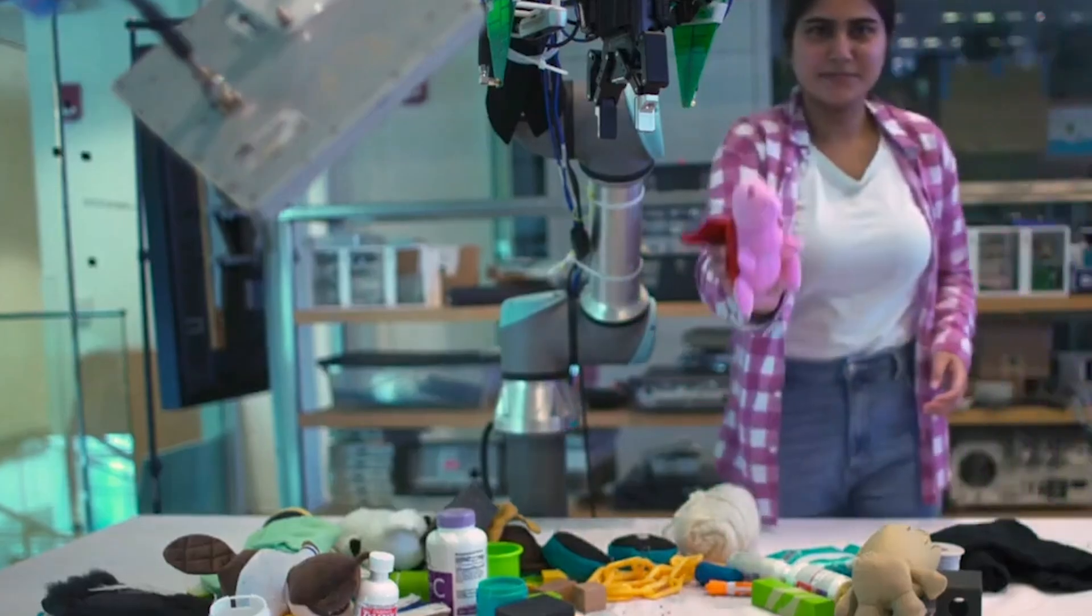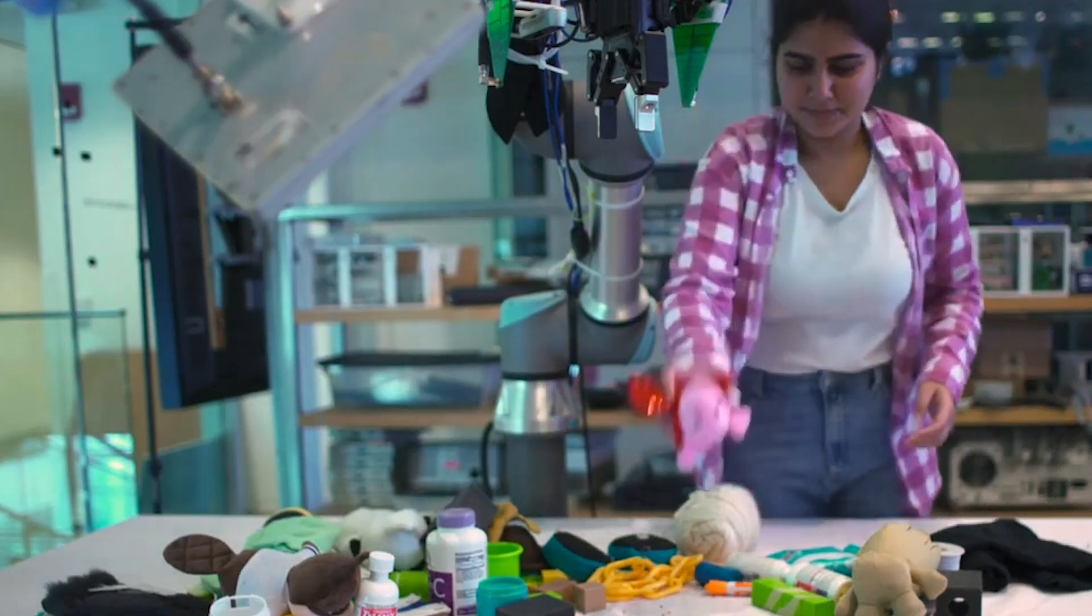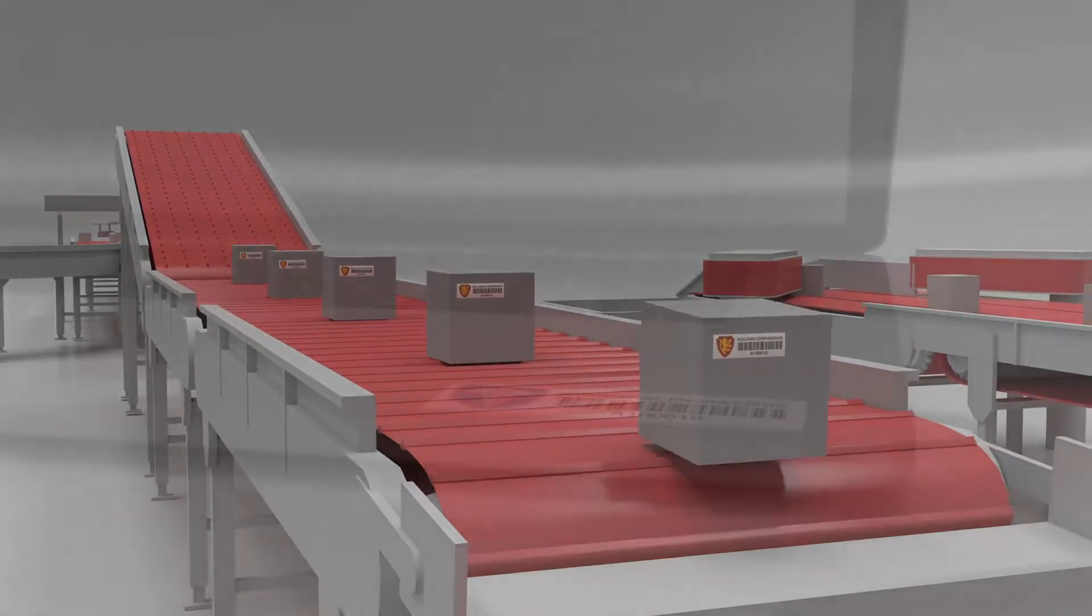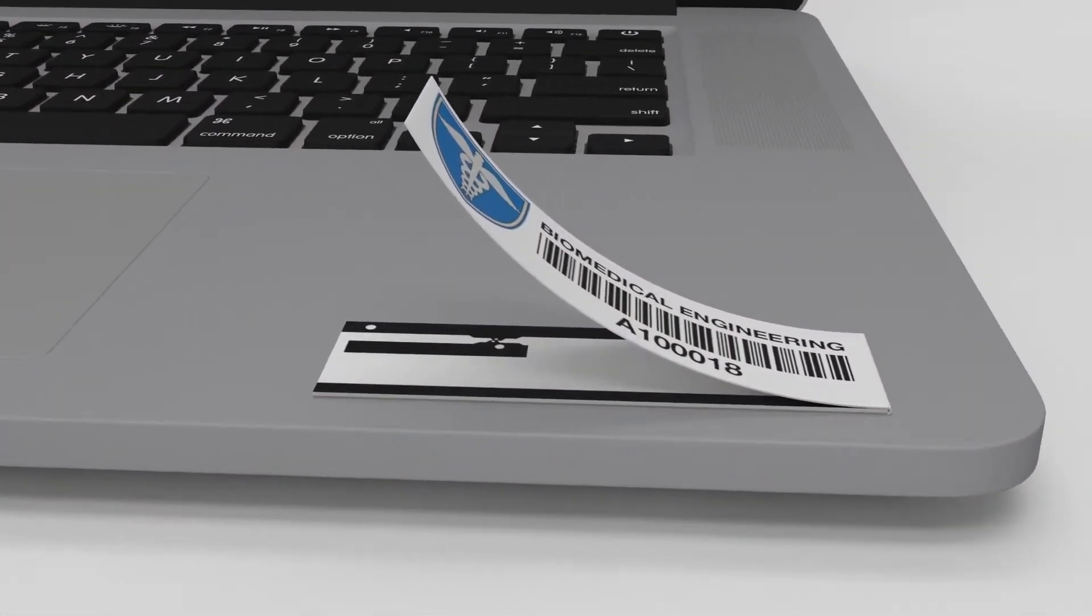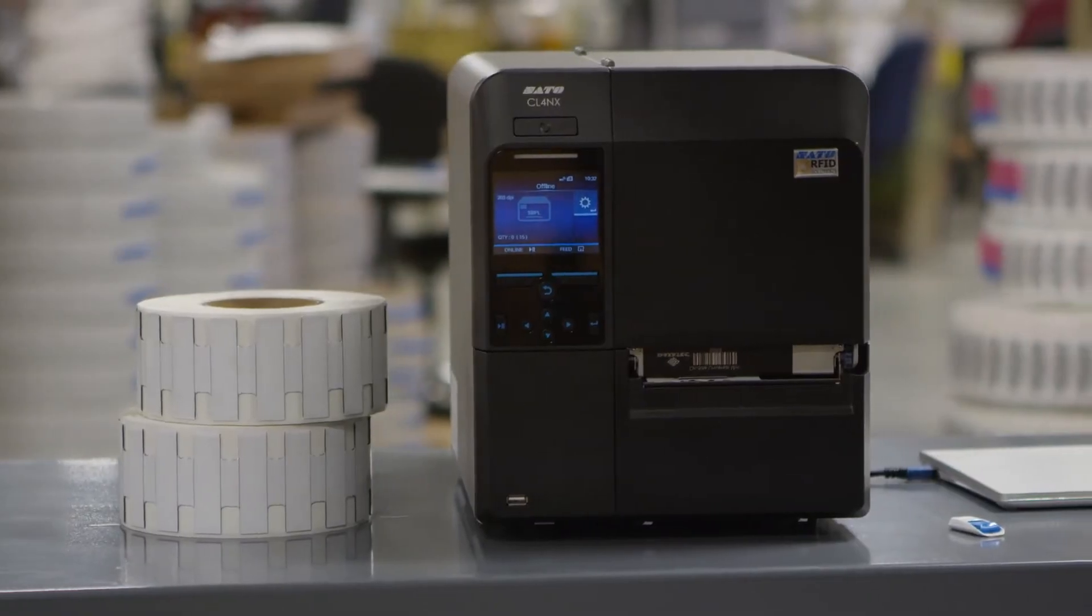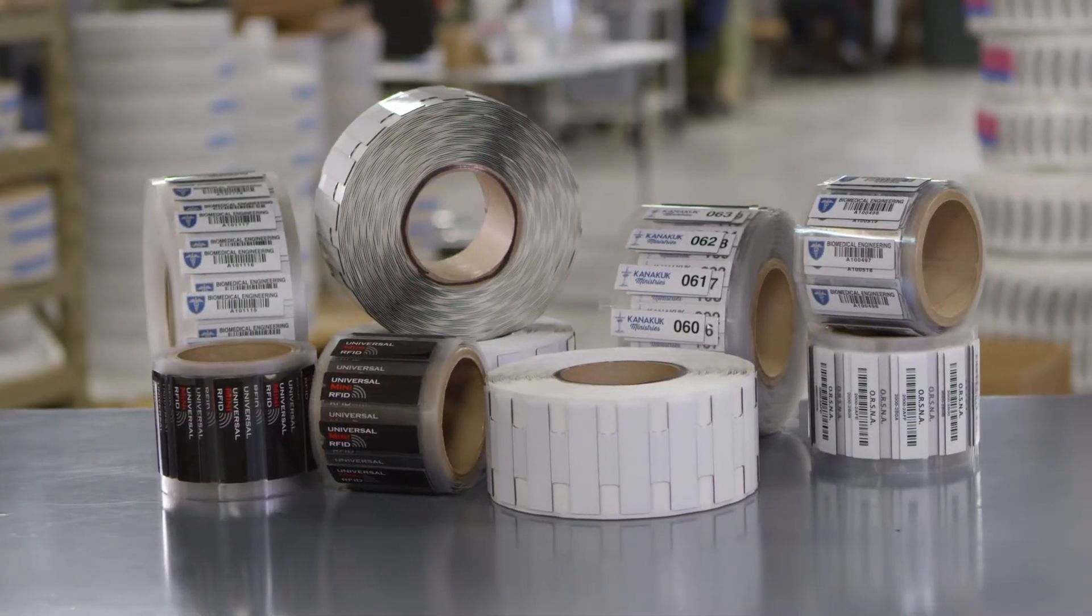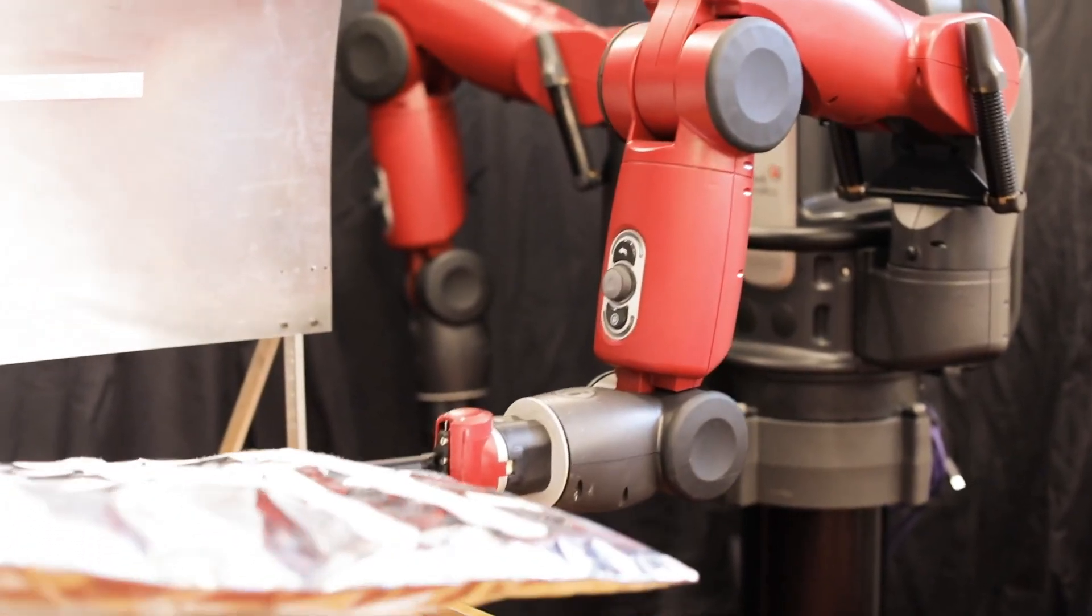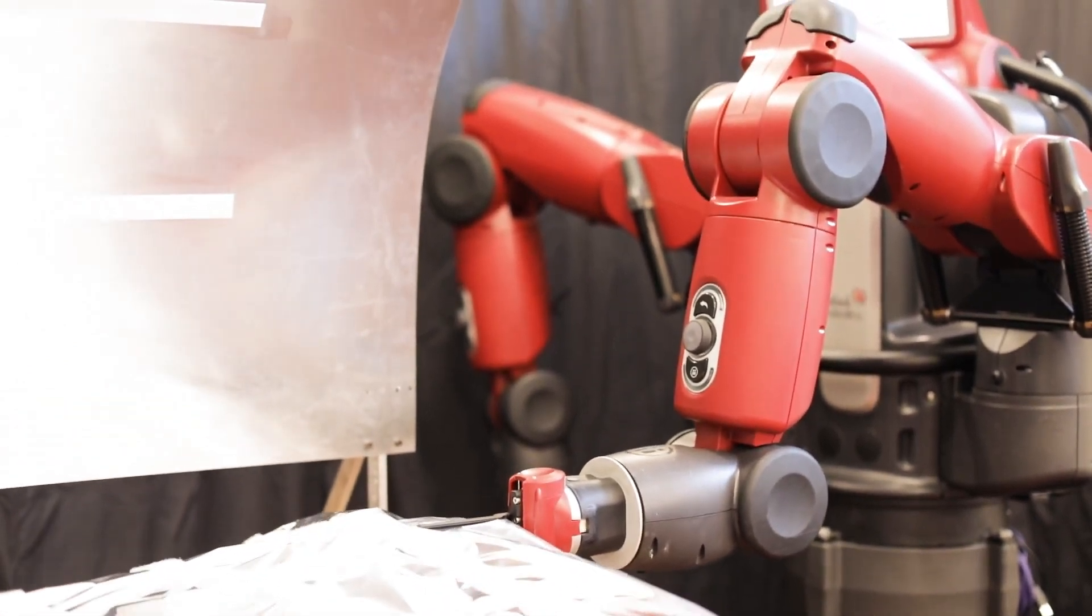MIT researchers previously demonstrated a robotic arm that combines visual information and radio frequency signals to find hidden objects that were tagged with RFID tags, which reflect signals sent by an antenna. Building off that work, they have now developed a new system that can efficiently retrieve any object buried in a pile. As long as some items in the pile have RFID tags, the target item does not need to be tagged for the system to recover it.